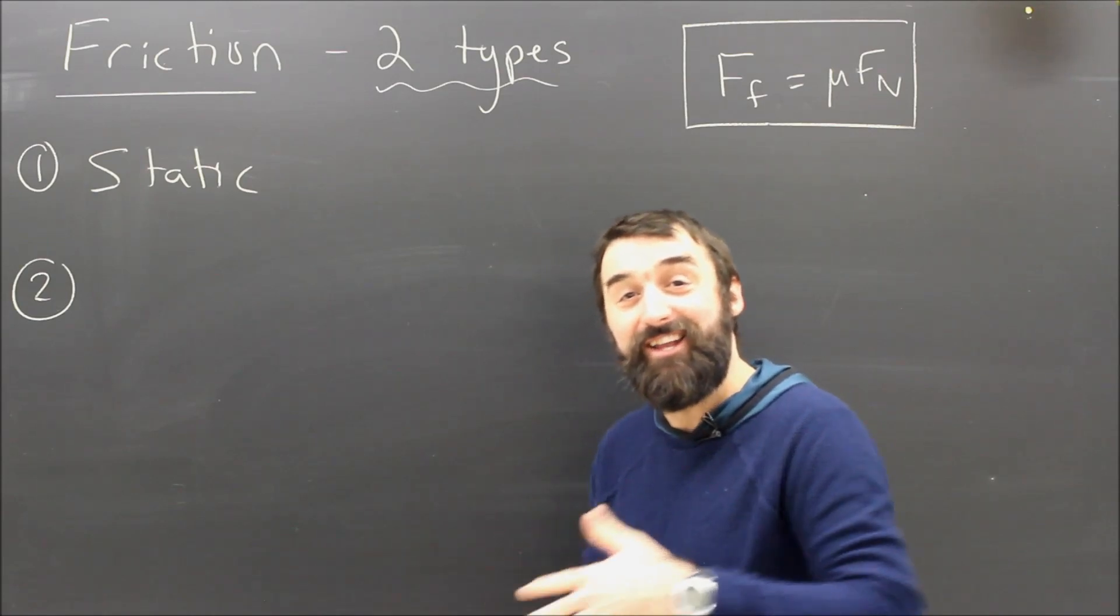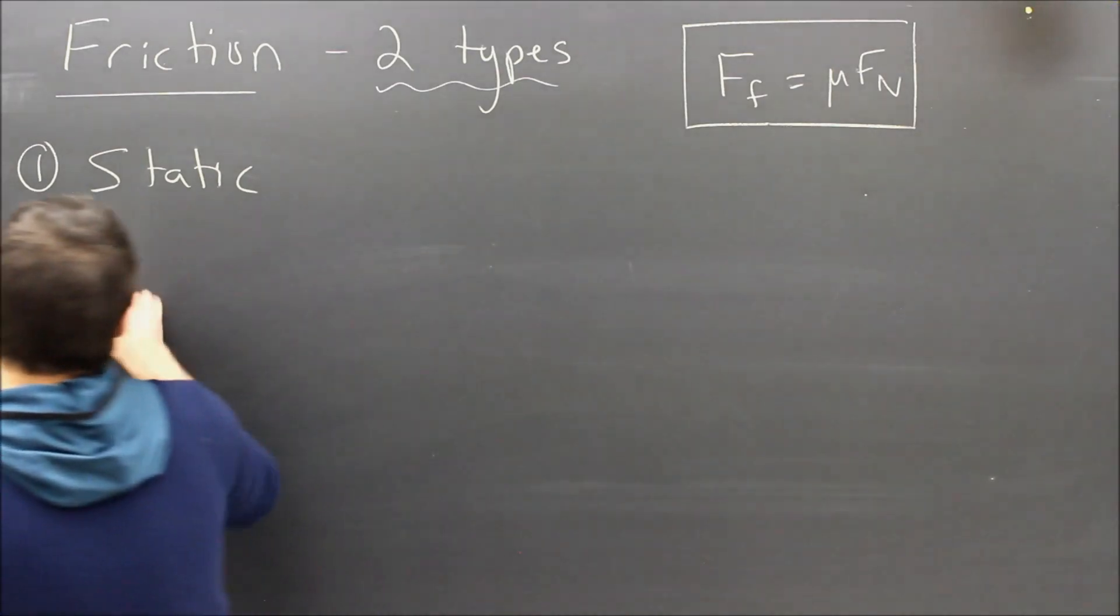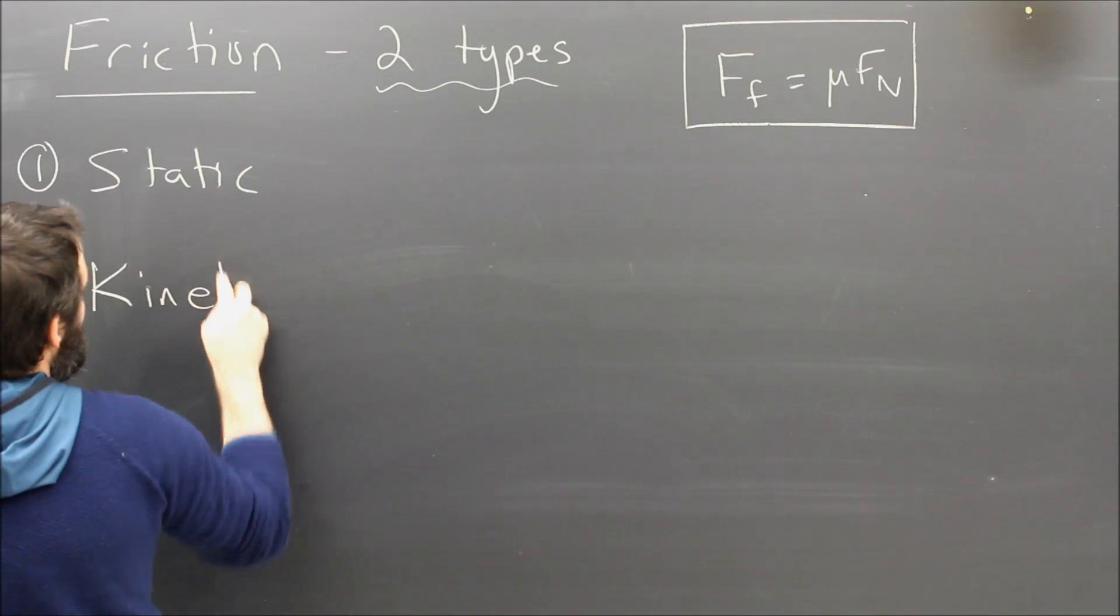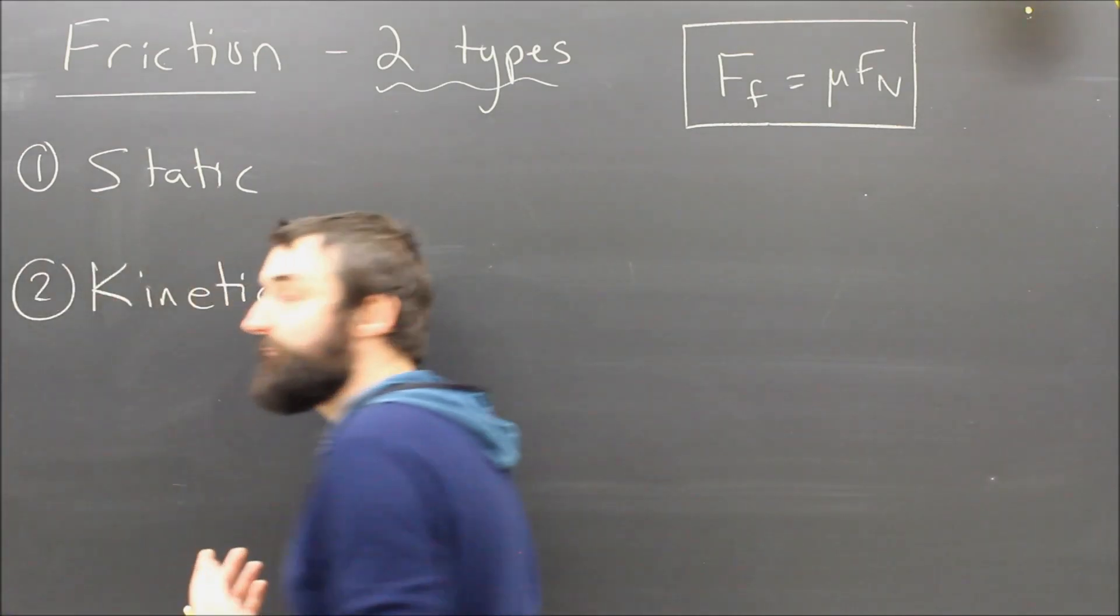And if the surfaces are sliding or moving, there's motion. Fancy word for motion is kinetic, so kinetic friction. Two types.